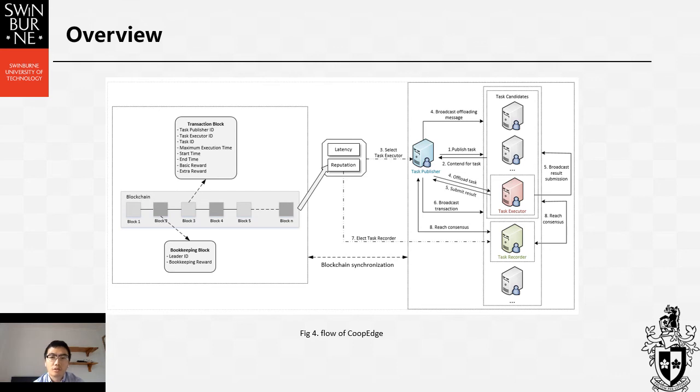Then, based on the edge server's reputation, a recorder is selected. It creates a block and packs the transaction to the block. Finally, the recorder broadcasts the block to the other edge servers to validate. Edge servers receive the proposed block, starting to validate and vote for the block. The recorder collects the validation results and adds the block to the blockchain when consensus is reached.